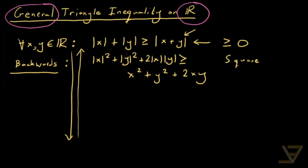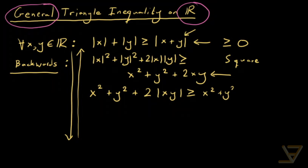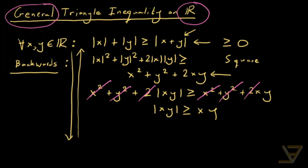We can get rid of the outer absolute values since squaring something is the same as squaring its negative, so absolute values aren't necessary there. This gives us x² plus y² plus 2·|xy| greater than or equal to x² plus y² plus 2xy. After cancelling x² and y² and the factor of 2 from both sides, we get |xy| ≥ xy, which is definitely true because the absolute value of something is always greater than or equal to that thing itself.